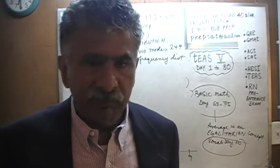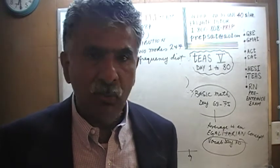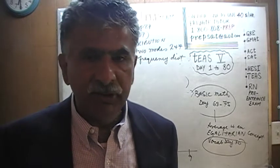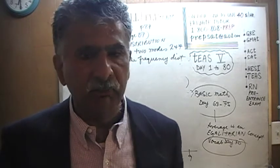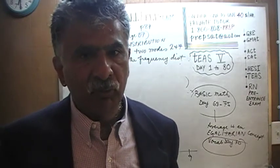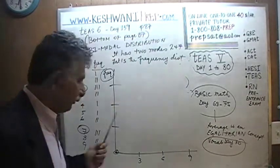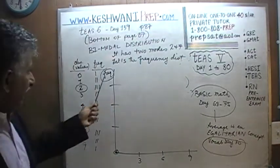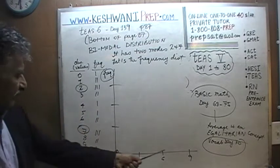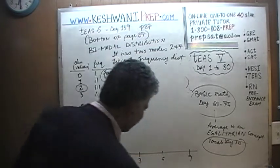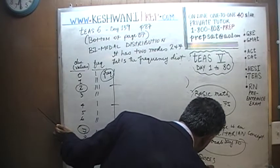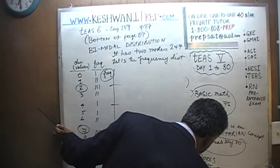We're not dealing with two different variables — there is no independent variable and no dependent variable in this context. There is only one variable, which is the score. The question is how often does a given score appear. On the y-axis we have frequency: 1, 2, 3 — 3 is the highest frequency. And these are the values, the scores, or observations.